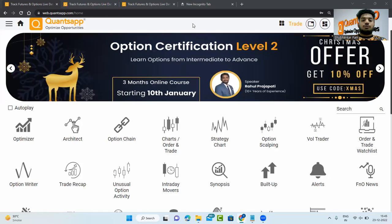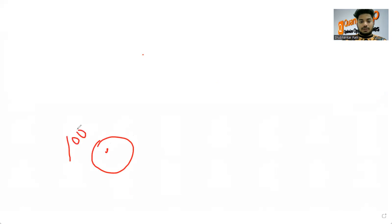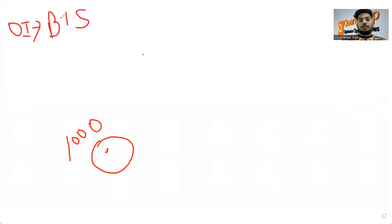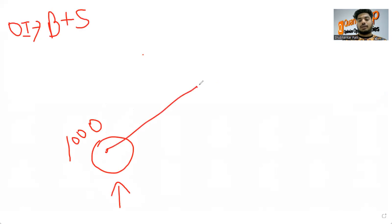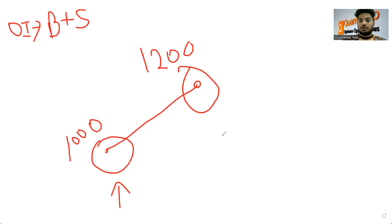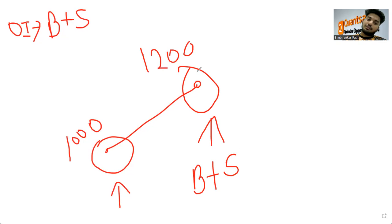Let's say there was a stock trading at 1000 rupees. Open interest is created when a buyer and a seller come together. On a given day you see OI going up, and the stock moves from 1000 to, let's say, 1200. Even on this next day you see OI going up again. There are buyers who are buying and sellers who are selling. The buyer is buying 200 rupees more expensive — he bought at 1000 and is now ready to buy even at 1200.